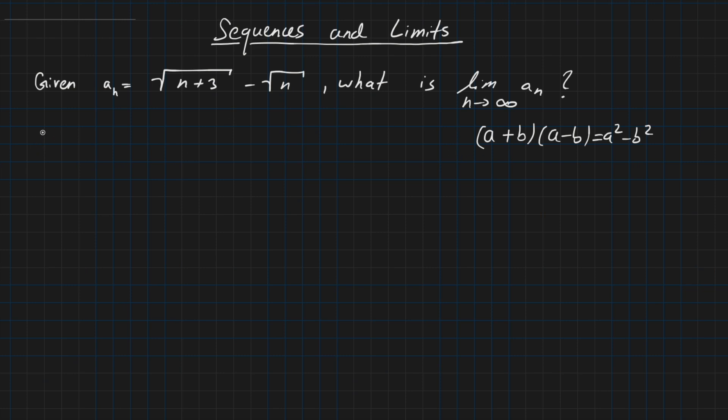So a_n equals root of n plus 3 minus root of n, and you can think here of a and b for these terms, and then we can apply the rule where we are putting a plus b, so this first factor here, to the other side. So we are dividing by a plus b, like this.